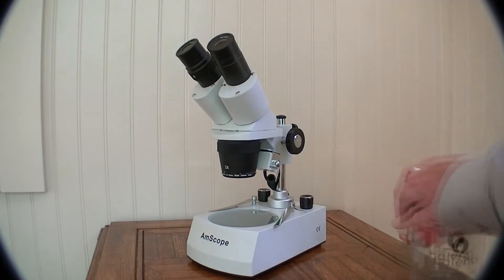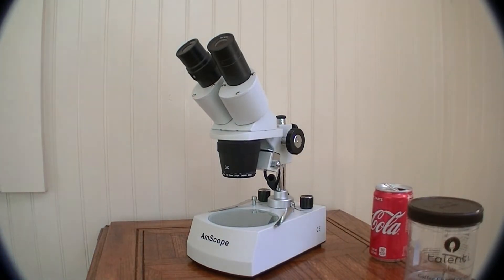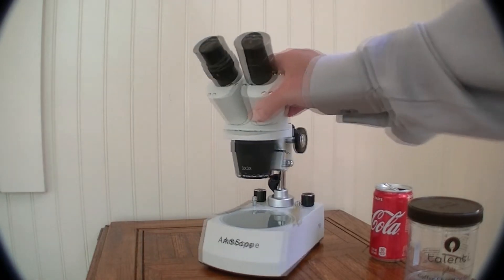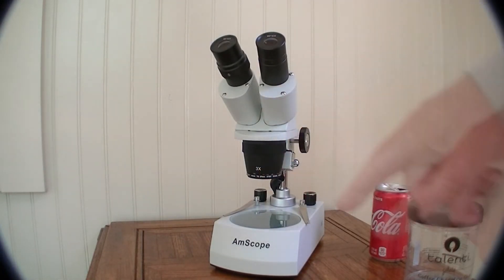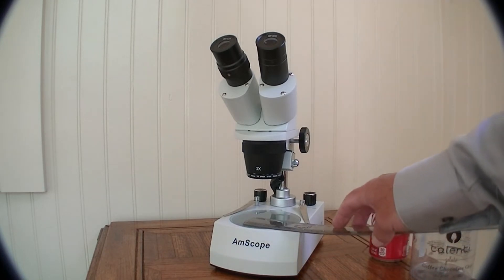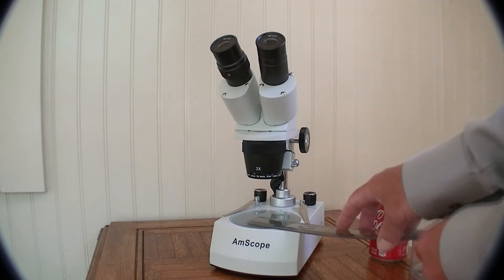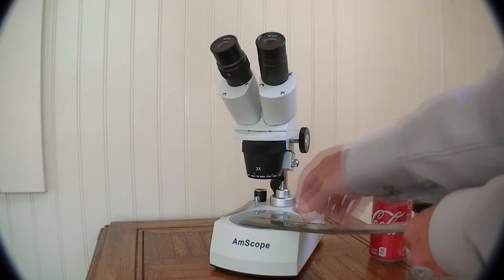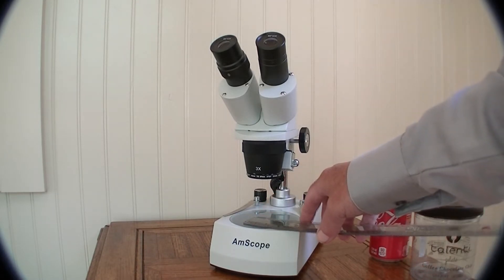The first thing we do is check the field of view. We're going to make a condenser that works with the 3x objective and 10x eyepiece, so we've got 30x magnification overall. We put a ruler under the microscope and just check how much we can see, which in this case turns out to be 12mm field of view.